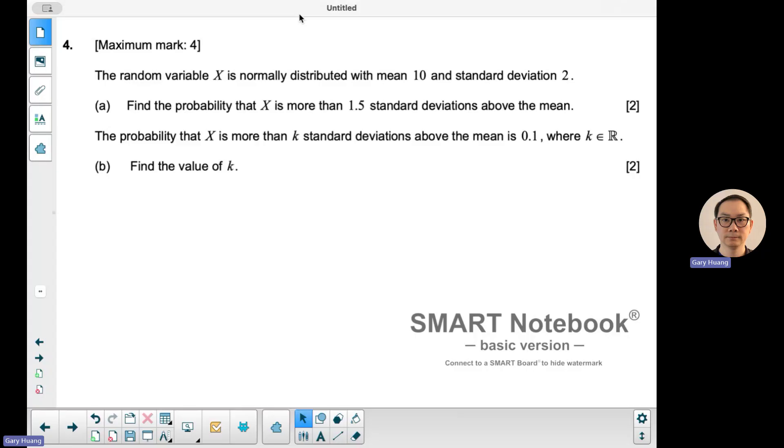As you can see here, this is a normal distribution question. A random variable X is normally distributed. This question, they give you the mean and the standard deviation.